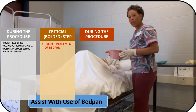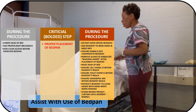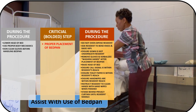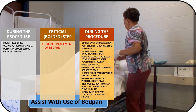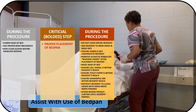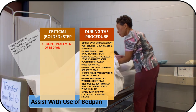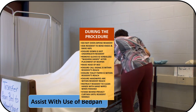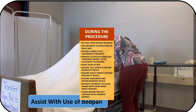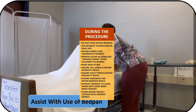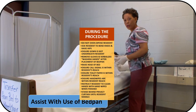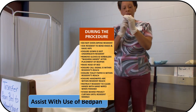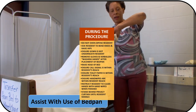You want to make sure that you do not overexpose the resident. Ask Mrs. Jones to bend her knees with her feet flat on the mattress, then ask her to raise her hips. 'Mrs. Jones, could you raise your hips for me, please?' As the resident raises their hips, make sure the gown is not underneath them as you place the bedpan.